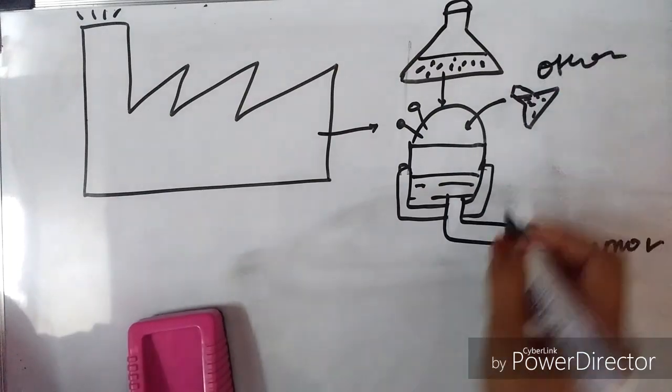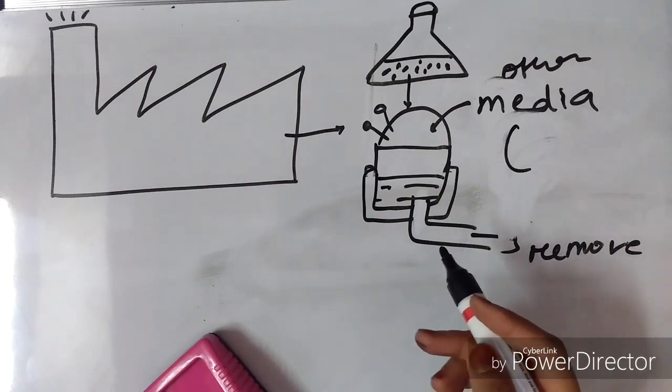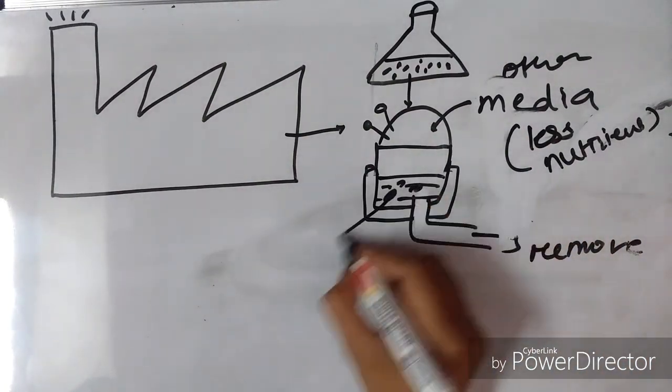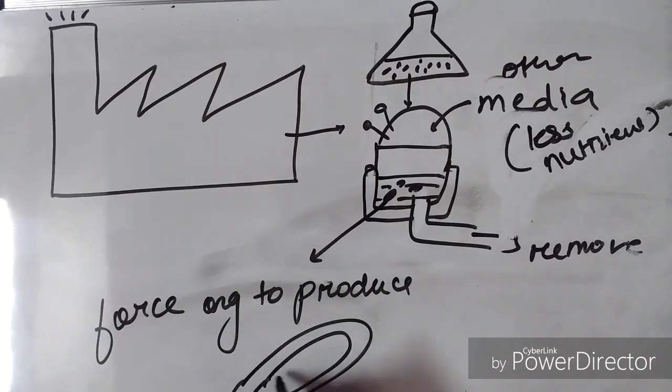The first media is removed and another media is added which consists of less nutrients compared to the first media. This typically forces the organism to produce PHA inside the cell.